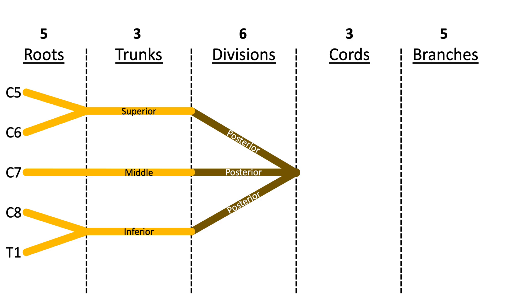You can complete each of the anterior divisions by drawing two lines on the tops and the bottom of this sequence, and then note that the middle trunk has an anterior division that combines with the anterior division from the superior trunk.